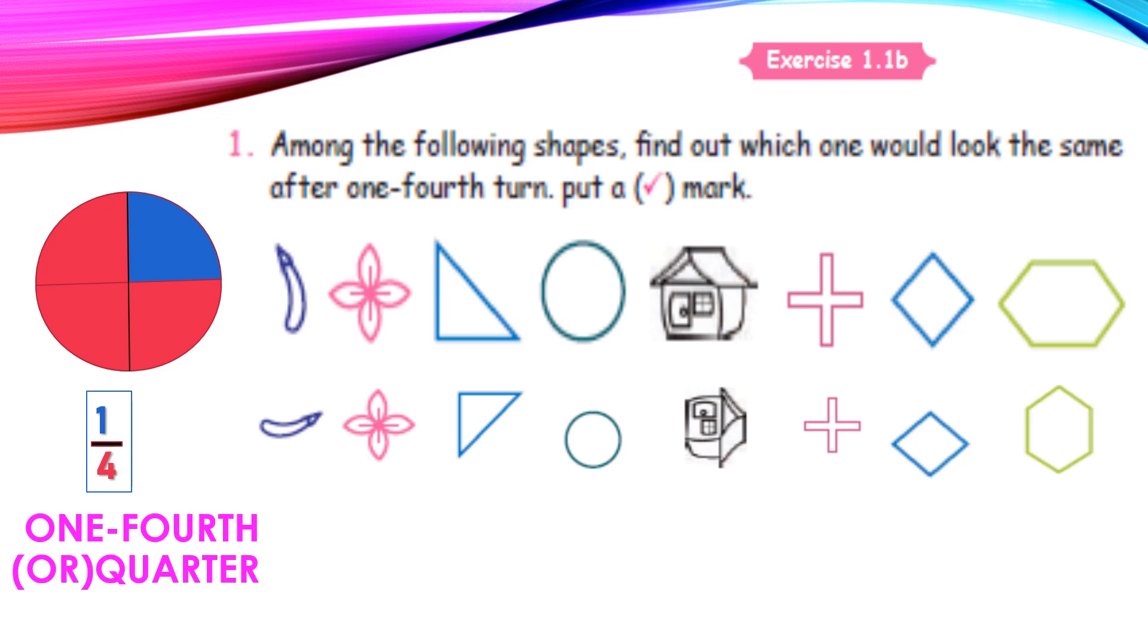Now we have to put a tick mark. The first shape is not looking the same, so we should not put tick for that. Next, flower symbol. Yes, it's looking same. Triangle, no. Circle, yes. House, no. Plus symbol, yes. Then diamond also looking same only. But this is not. So these four are the correct answer for this question.